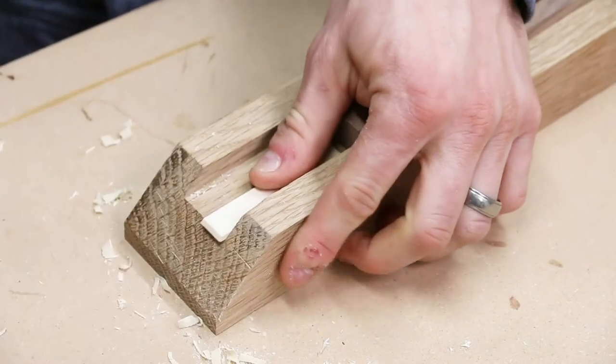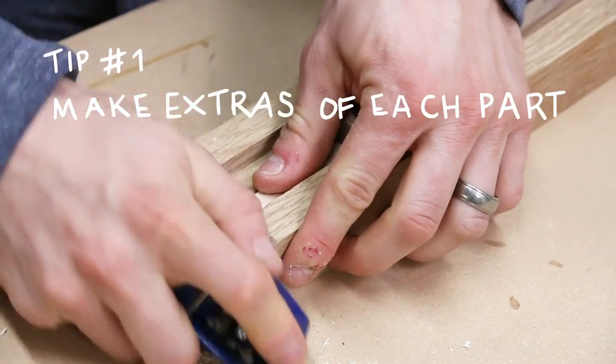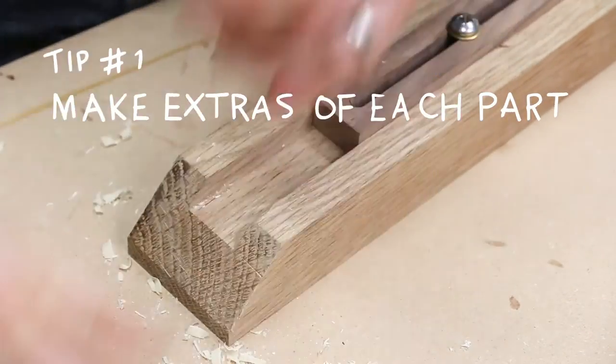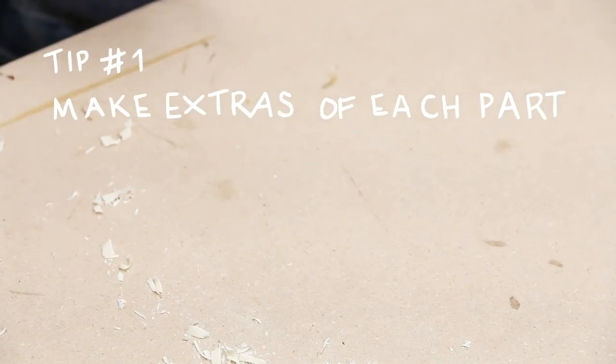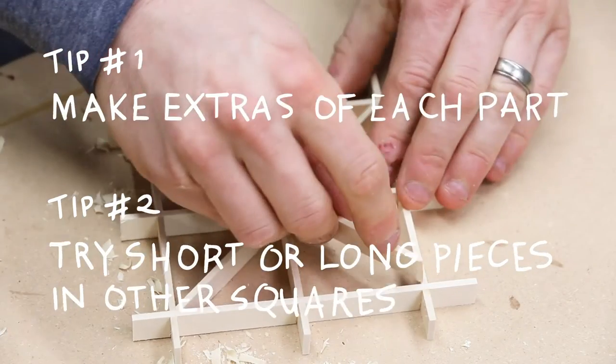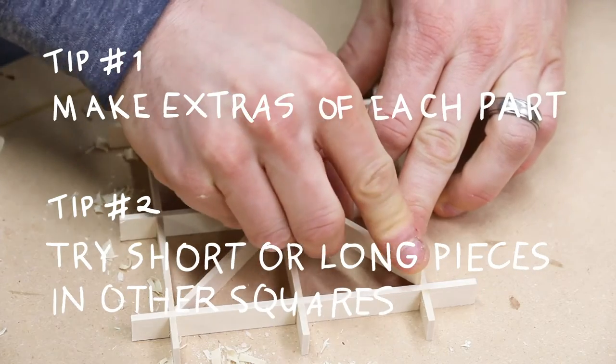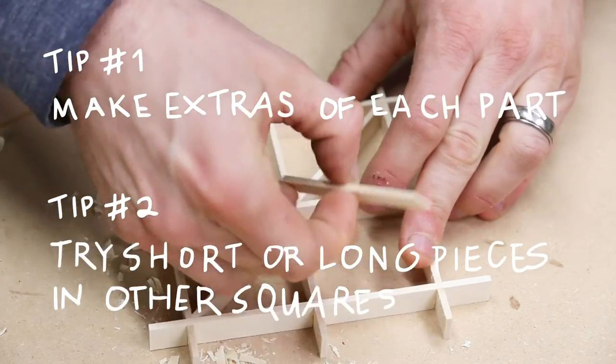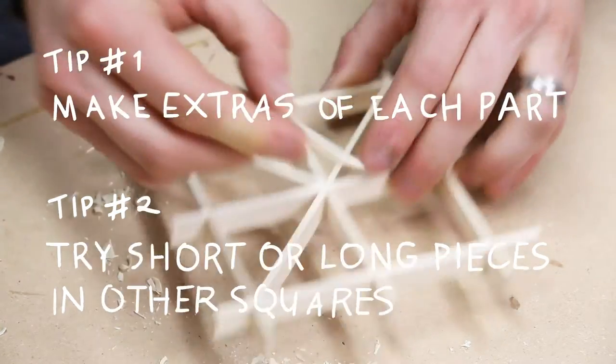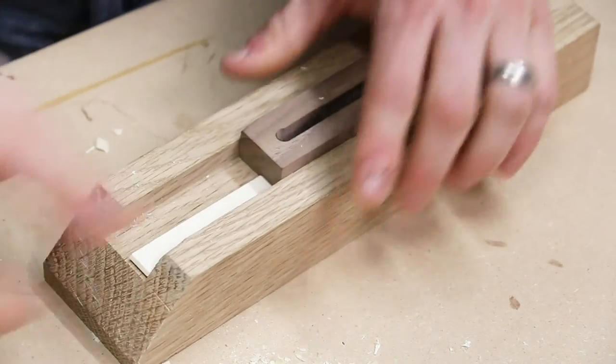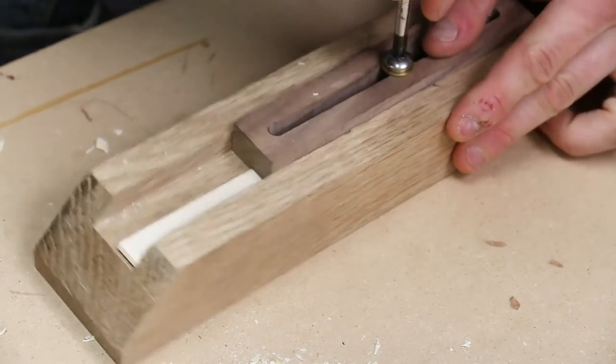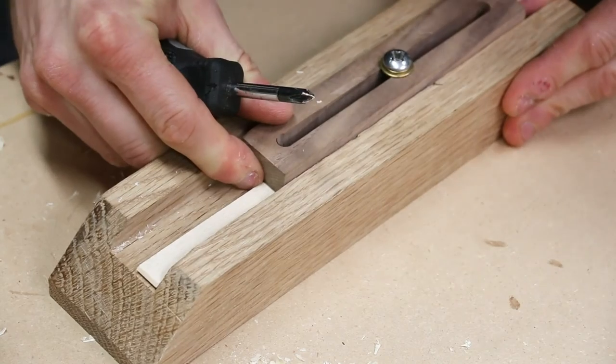Here's two tips when it comes to working with Kumiko. Make extras of each part and if your piece is slightly too long or slightly too short, try it in another square. The likelihood that all squares are exactly the same size is very low, which means your piece may still work. If all else fails, just cut one of your extra pieces, making sure you solve for the error first. Usually it's moving the stop block slightly.